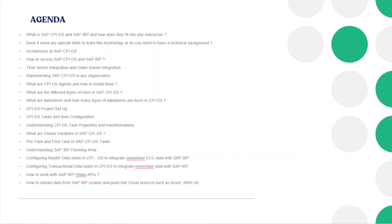We'll also see task properties: the different types of transformations which are there, global variables in CPI DS, pre-task and post-task, and how to execute scripts. Then we'll cover some basics of the SAP IBP planning area — where we push the data from CPI DS — followed by the main task of creating and executing master data and transactional data jobs by connecting to ECC or any other ERP system and pushing data to IBP.